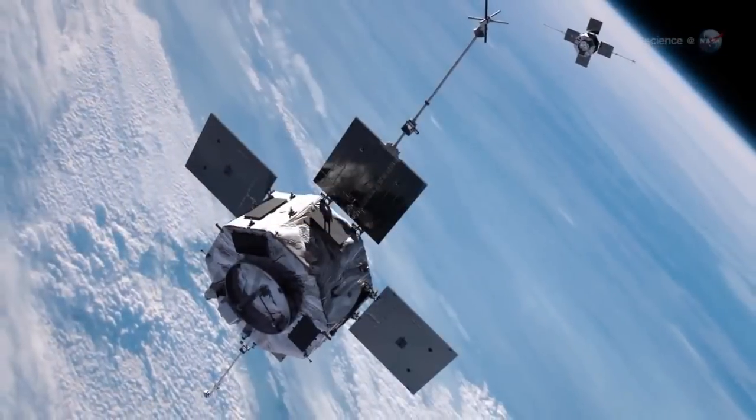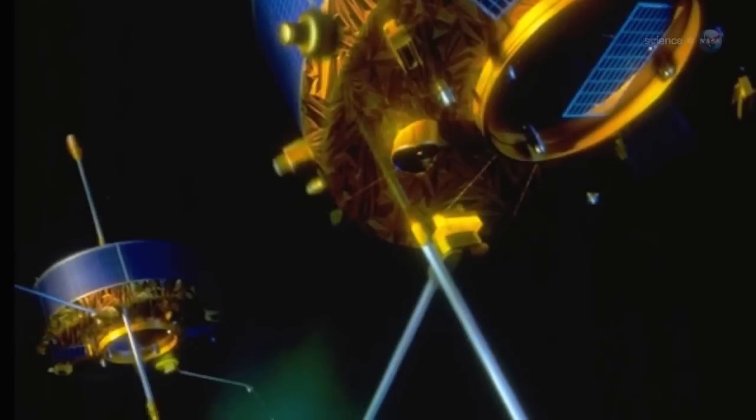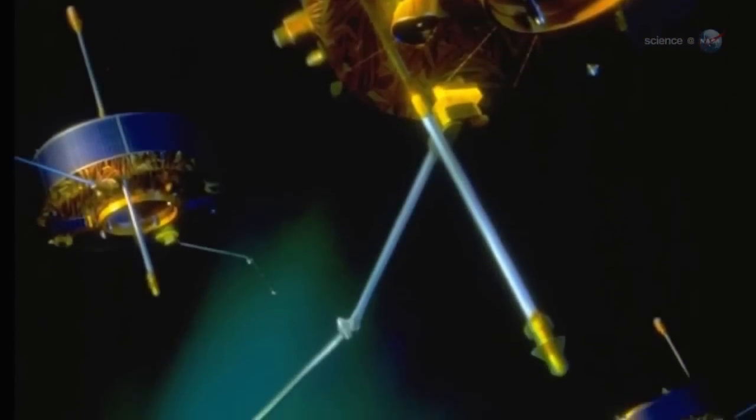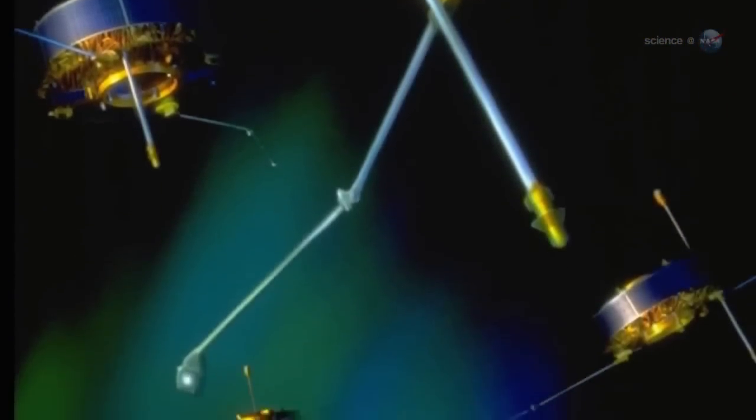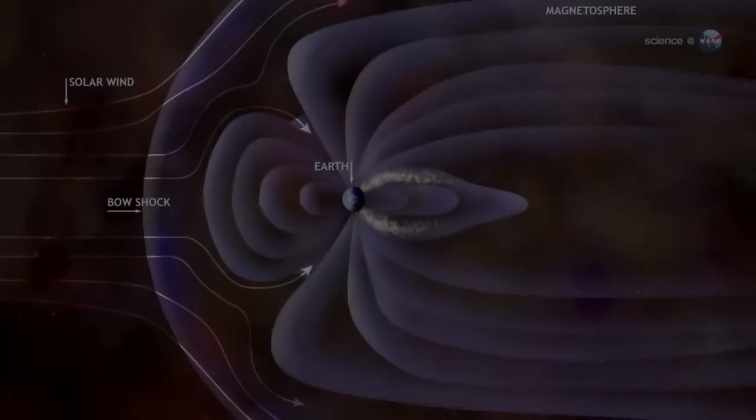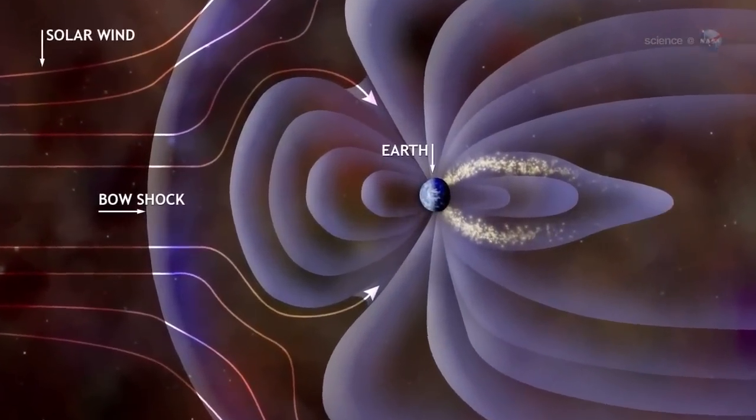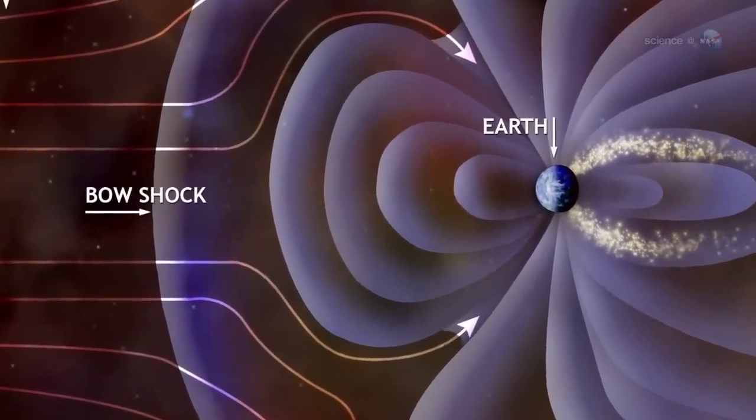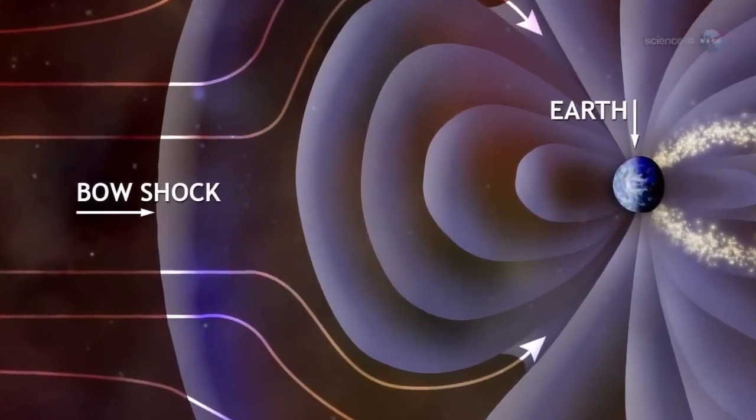Observations by NASA's THEMIS spacecraft and Europe's Cluster probes suggest that these magnetic portals open and close dozens of times each day. They're typically located a few tens of thousands of kilometers from Earth, where the geomagnetic field meets the onrushing solar wind.